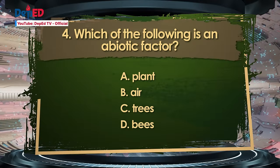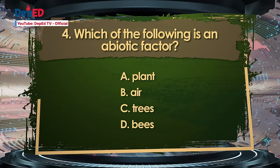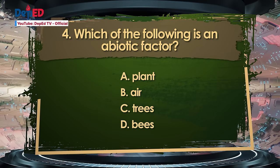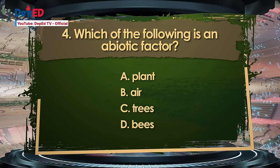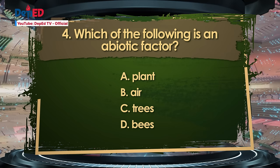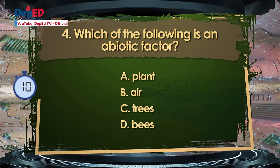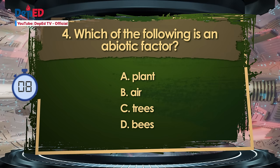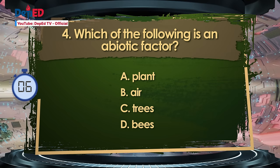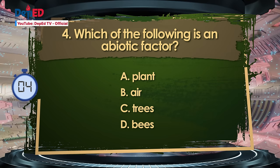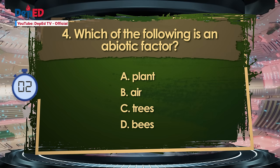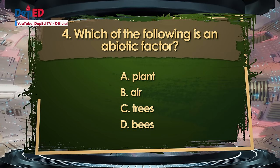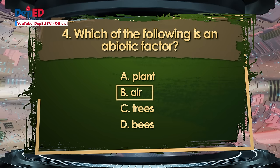Number 4. Which of the following is an abiotic factor? A. Plant. B. Air. C. Trees. D. Bees. The correct answer is B — Air.